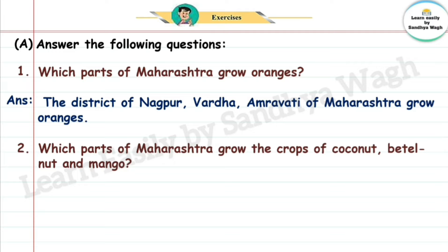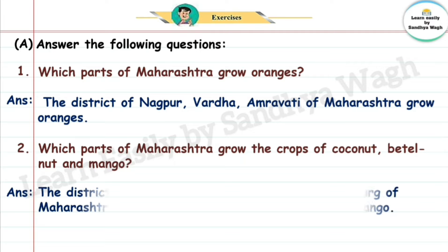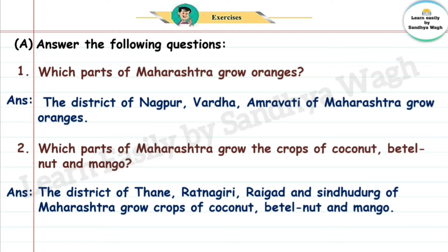Question 2: Which parts of Maharashtra grow the crops of coconut, bettelnut, and mango? Bettelnut means supari, coconut means naral, mango means amba. Answer: The districts of Thane, Ratnagiri, Raigad, and Sindhudurga of Maharashtra grow crops of coconut, bettelnut, and mango.